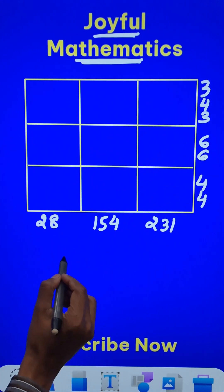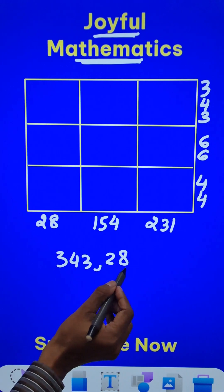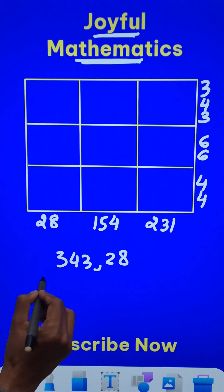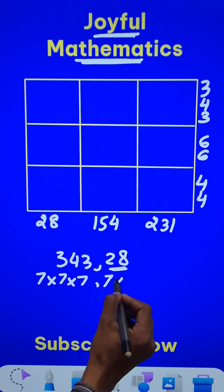So if you see 343 on the right hand side and 28 at the base, 28 is an even number. And this 343 exactly is 7 cubed, 7 into 7 into 7. And this also has 7 as a common factor.